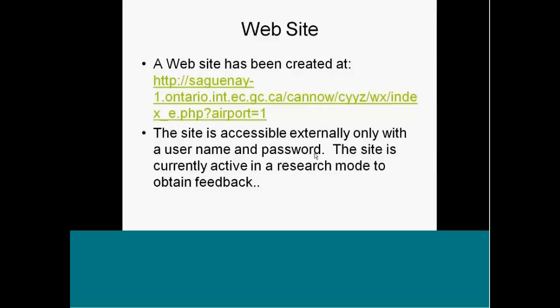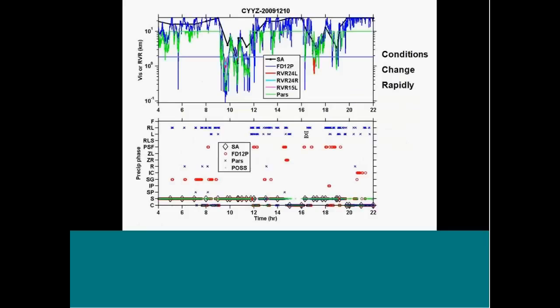At any rate, if you want a tour of the site for the Canadians, I can provide that for you. This just shows you an example of the fact that conditions change rapidly. This just shows you visibility or runway visual range as a function of time. And then the precipitation phase as a function of time from our various sensors. And the purpose of this graph is merely to show you the rapid changes that can occur at an airport. And the need for high-resolution observations and high-resolution predictions.